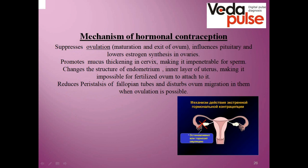Now, moving to hormonal contraception, also called oral contraception. There are different types, but they all have one function: to stop ovulation. By taking oral contraceptives, the egg cell doesn't mature and doesn't leave the ovary, making fertilization impossible. These hormones also change the thickening of mucus in the cervix, preventing sperm penetration; change the inner layer of the uterus, making it impossible for an ovum to implant; and affect peristalsis of the fallopian tube, where fertilization normally occurs before the fertilized ovum migrates to the uterus.